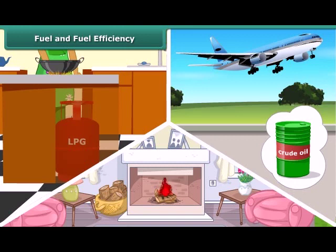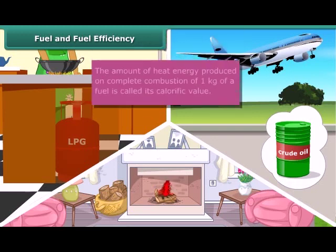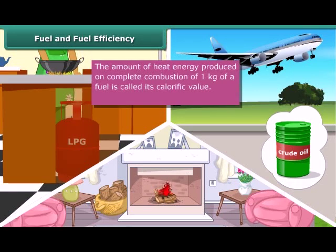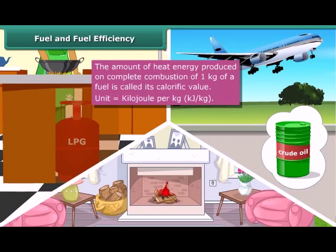All fuels do not burn efficiently. Fuel efficiency is determined by its calorific value. The amount of heat energy produced on complete combustion of one kilogram of a fuel is called its calorific value, and it is expressed in kilojoules per kilogram. The calorific value of LPG is more than that of wood or coal, which is why LPG is a more efficient fuel than wood or coal.